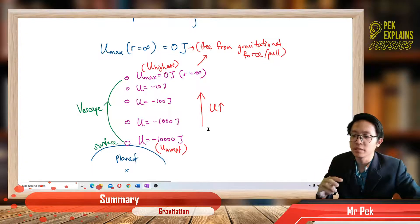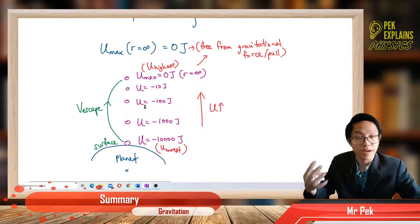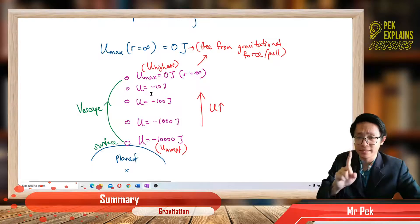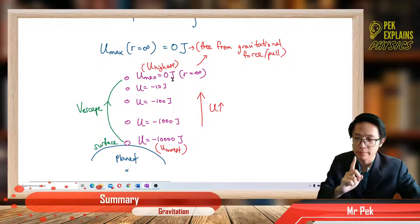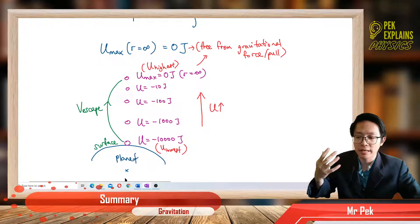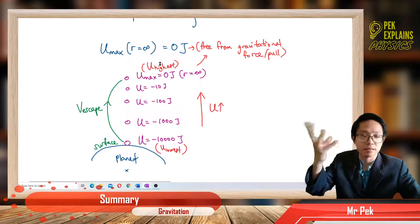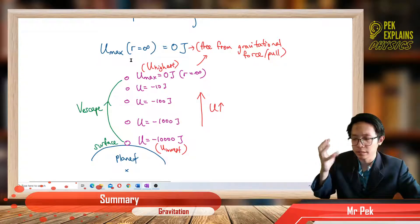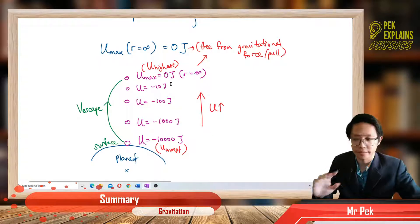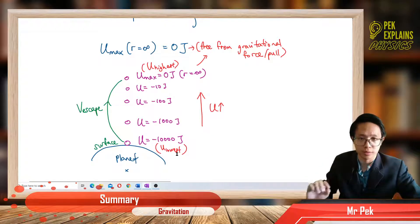Becoming less and less negative means the potential energy actually increases with height. So potential energy increases when you go up. Potential energy is maximum at zero. Zero means it is free from the gravitational force — the planet no longer pulls on the object; it doesn't experience any gravitational force anymore. Potential energy equal to zero is considered the highest. At the surface it is most negative — most negative means potential energy is lowest. Lowest is most negative, highest is zero. Remember that.